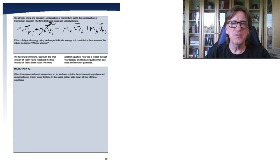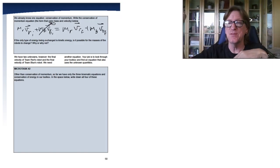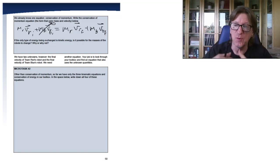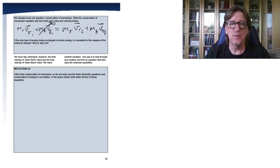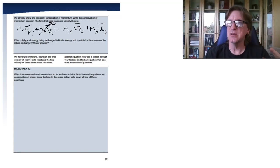If the only type of energy being exchanged is kinetic energy, it's not possible for the masses of the robots to change — because in order for that to happen, either something flies off or there's deformational energy. So we're okay keeping MR and MB the same throughout. In addition to conservation of momentum, we know three kinematics equations and conservation of energy — five tools in total — and we want to see which ones will help us get those final velocities.